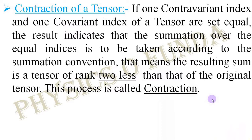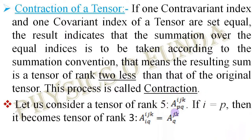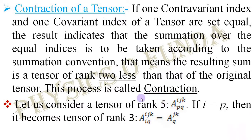Let us see this with an example. We consider a tensor A with contravariant indices i, j, k and covariant indices p and q — a mixed tensor of rank 5, contravariant rank 3 and covariant rank 2. If we set contravariant index i equal to covariant index p, then we get a tensor with contravariant indices j and k and covariant index q. The identical indices i and p are dropped, giving a resulting tensor of rank 3, lowered by 2 from the original tensor. This is contraction, as used in the inner product concept seen in the previous video.